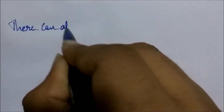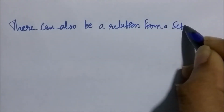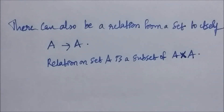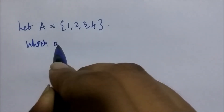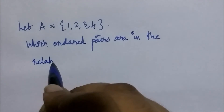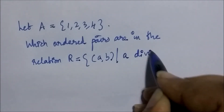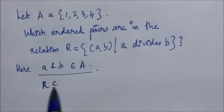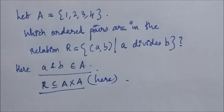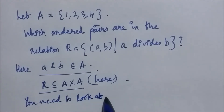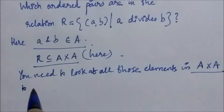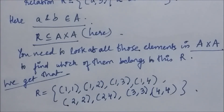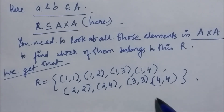There can also be a relation from a set to itself. A relation on set A is a subset of A cross A. For example, let A equal to {1, 2, 3, 4}. The relation R is defined as the set of all (a, b) such that a divides b, where both a and b belong to set A. The ordered pairs in this relation are: (1,1), (1,2), (1,3), (1,4), (2,2), (2,4), (3,3), and (4,4), because for each of these pairs, a divides b.